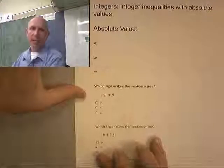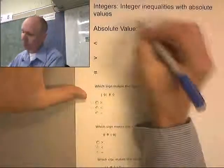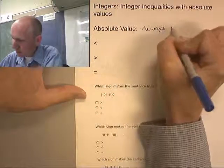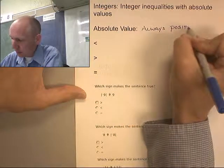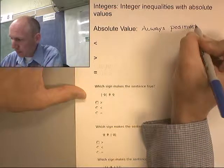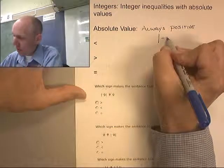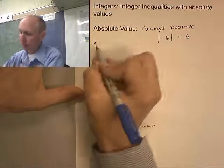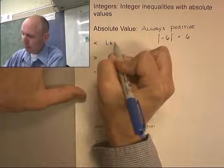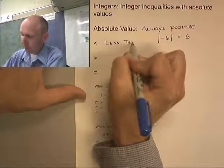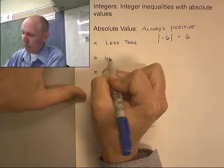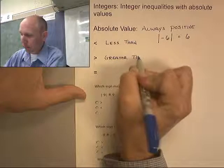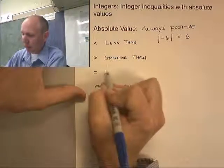The absolute value makes everything positive, always positive. So if I have the absolute value of negative six, that would be six. This is our less than symbol, this is greater than, and this means is equal.